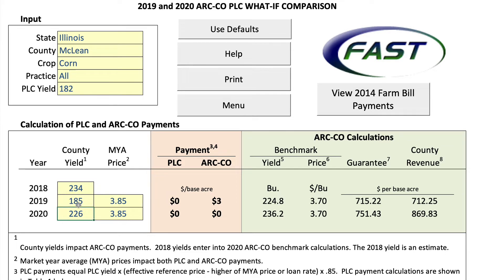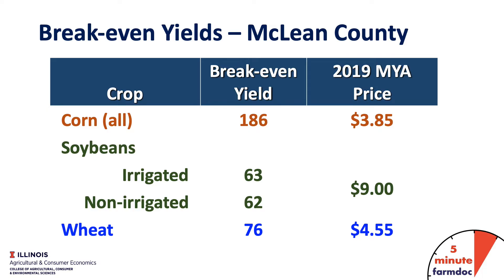We did that for all counties and crops in Illinois. Here is what those break-even yields look like for McLean County: 186 for corn, given a $3.85 market year average price that USDA is projecting. For soybeans, 63 bushels per acre for irrigated and 62 for non-irrigated, given a $9.00 market year average price. And 76 bushels per acre for wheat.